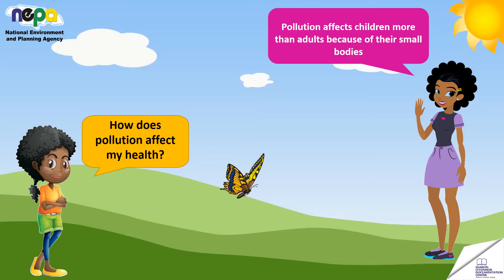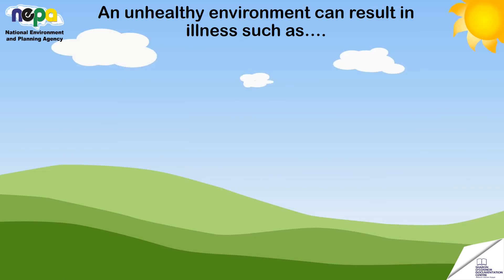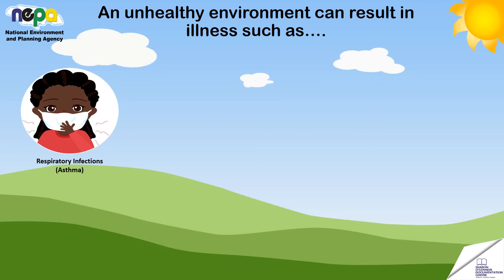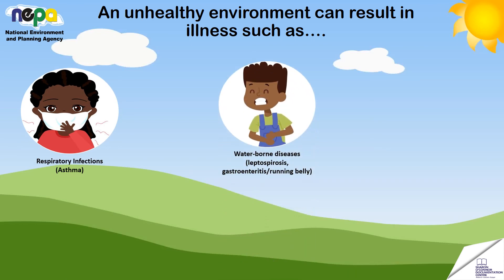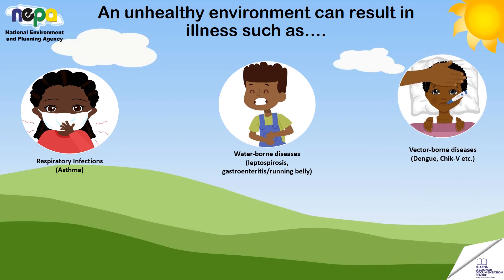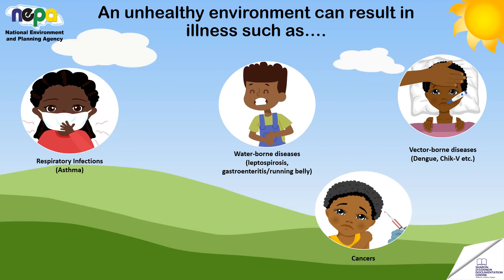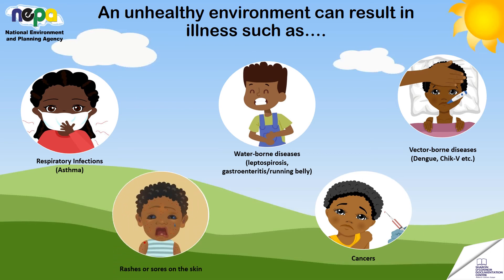Pollution affects children more than adults because of their small bodies. An unhealthy environment can result in illnesses such as respiratory infections like asthma, waterborne diseases such as leptospirosis, gastroenteritis or running belly, vector-borne diseases such as dengue or chikungunya, as well as cancers and rashes or sores on the skin.